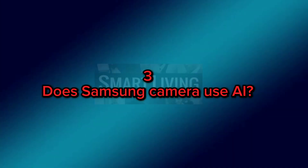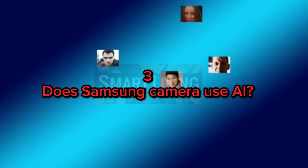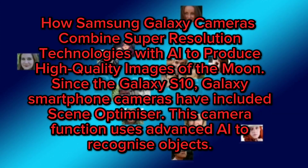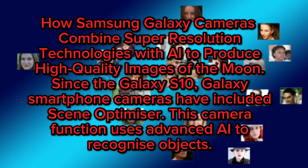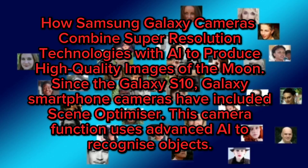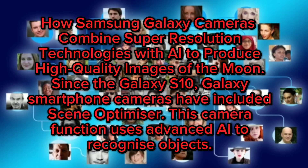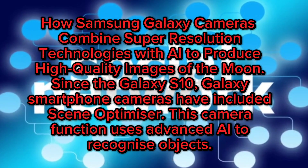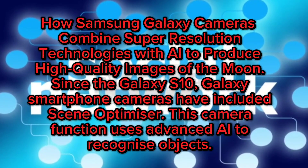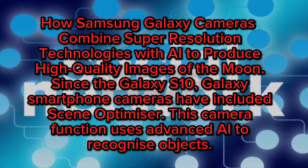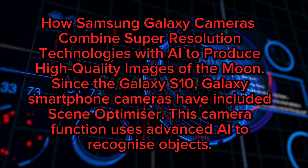Three: does Samsung camera use AI? Samsung Galaxy cameras combine super-resolution technologies with AI to produce high-quality images of the moon. Since the Galaxy S10, Galaxy smartphone cameras have included Scene Optimizer. This camera function uses advanced AI to recognize objects.